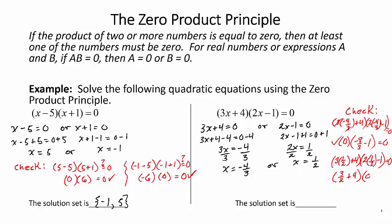But I'm curious about the second factor. So 2 times 1 half is 1, right? 1 minus 1 is zero, right? So anything times zero is going to be zero. So the solution set is negative 4 thirds and 1 half.